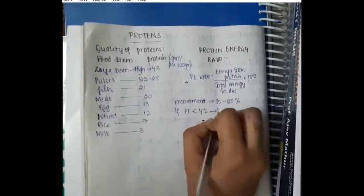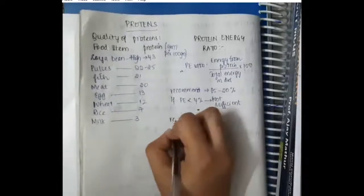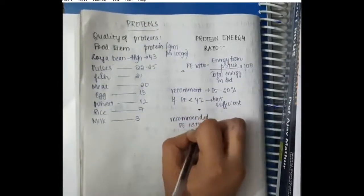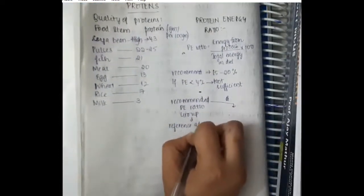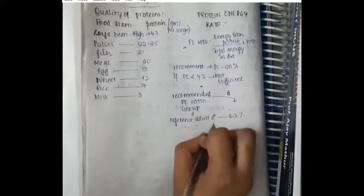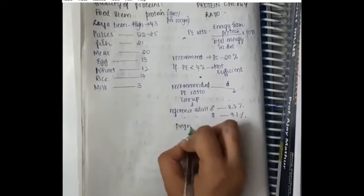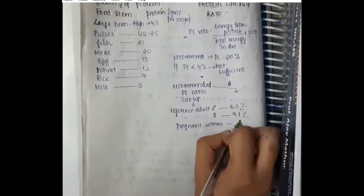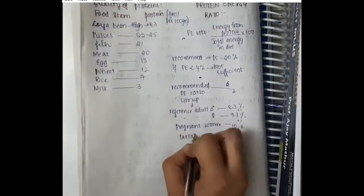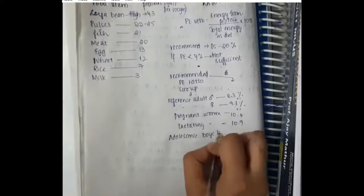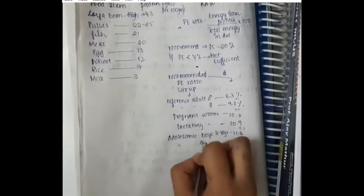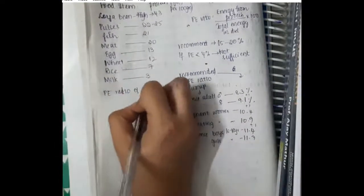Any food with protein energy ratio less than 4 percent is not a good recommended value. Recommended protein energy ratio by group: reference adult male 8.3 percent, reference adult female 9.1 percent, pregnant women 10.4 percent, lactating women 10.9 percent, adolescent boys aged 16 to 18 years 11.4 percent, and adolescent girls aged 16 to 18 years 11.7 percent.